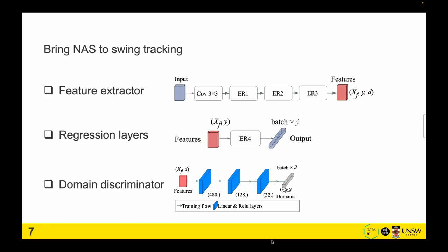So here's our feature extractor regression layer and domain discriminator. They basically have three random graphs. For the domain discriminator, we're simply using the DNN because during inference, we do not use the domain discriminator.